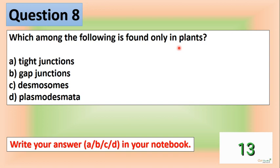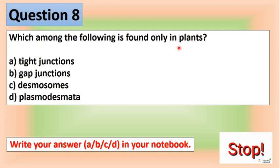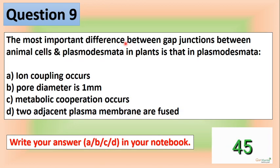Question 8: Which among the following is found only in plants? [timer] Moving to the next question. Question 9: The most important difference between gap junctions in animal cells and plasmodesmata in plant cells is that in plasmodesmata...